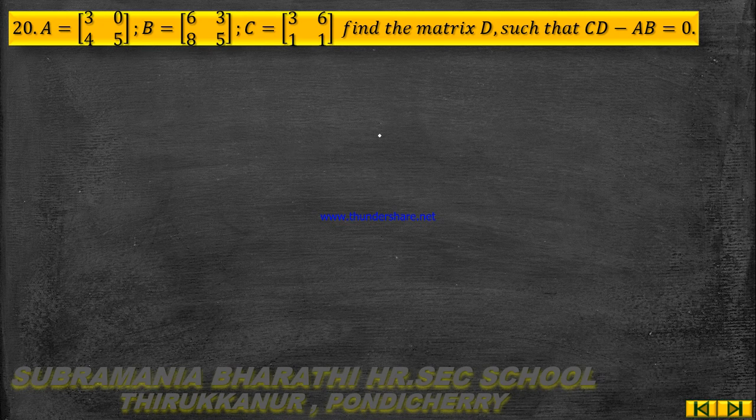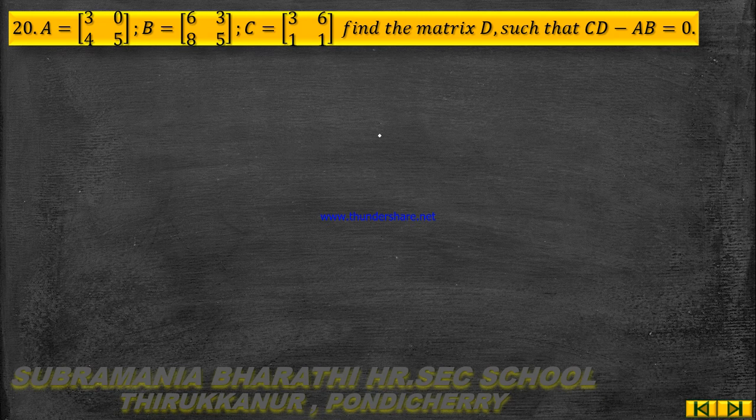So, Matrix A: 1st row 3, 0; 2nd row 4, 5. Matrix B: 1st row 6, 3; 2nd row 8, 5. Matrix C: 1st row 3, 6; 2nd row 1, 1.